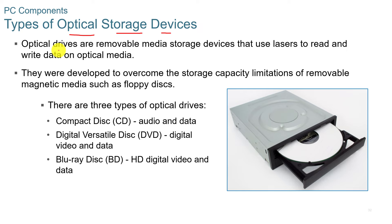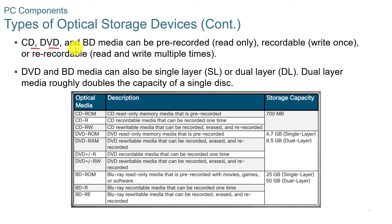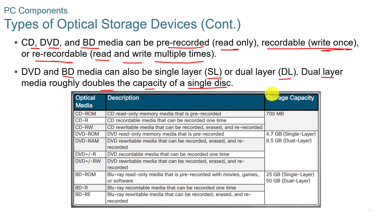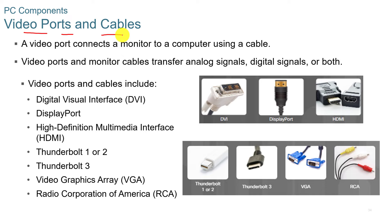Optical drives are removable media storage devices that use lasers to read and write data onto optical media. There are three types: compact disk or CD, digital versatile disk or DVD, and Blu-ray disk or BD for high-definition digital video data. CDs, DVDs, and BDs can be pre-recorded read-only, recordable write-once, or re-recordable. DVD and Blu-ray media can also be single layer or dual layer — dual layer roughly doubles the capacity. CD-ROMs hold about 700 megabytes, DVDs hold 4.7 to 8.5 gigabytes, and Blu-ray holds 25 gigabytes on a single layer up to 50 gigabytes on a dual layer.